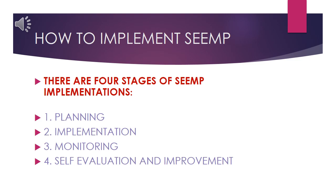There are four stages of SEEMP implementation. Number one is planning. Number two is implementation. Number three is monitoring. And number four is self-evaluation and improvement. This is a cycle.